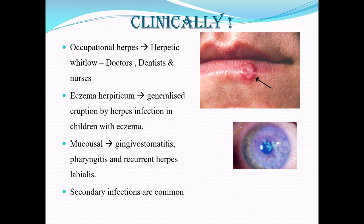Very rarely, infections can happen in particular occupations like doctors and dentists, where lesions are more commonly on the fingertips. Children with eczema can also develop this kind of infection, called eczema herpeticum. There can be mucosal infections presenting as gingival stomatitis, pharyngitis, and recurrent herpes labialis. Since the cutaneous barrier has been opened up, secondary bacterial infections can also happen.